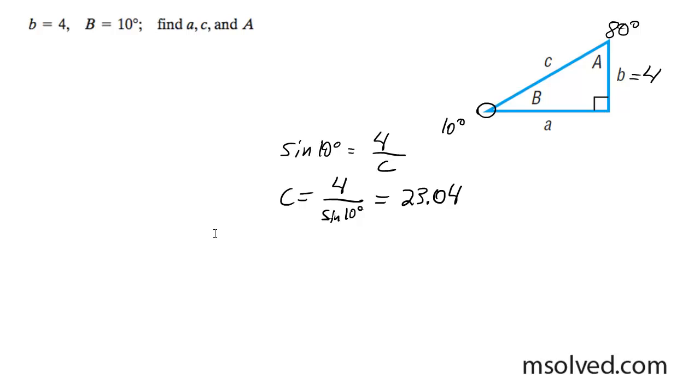And then what I'm going to do down here is I have c now. So you can use the Pythagorean Theorem or you can continue using trig. I'm going to use trig here. So in this case, I'm going to do the sine of 80 degrees is equal to A over 23.04.